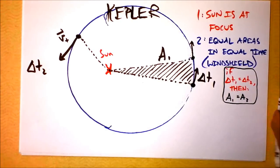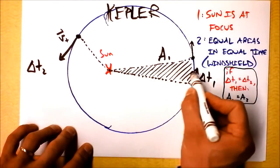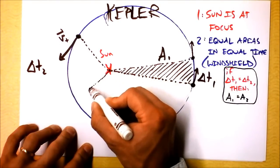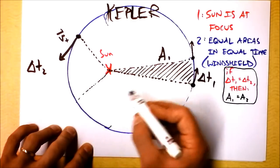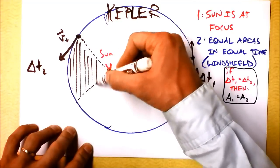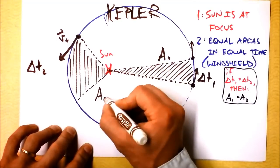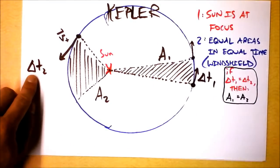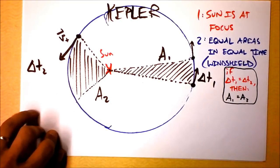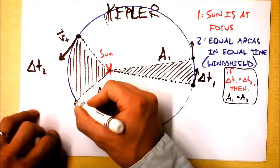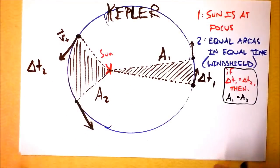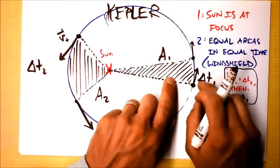And I'll try to draw that for you. What we're saying is that this area is then a much broader area here because of the fact that it's going faster. So we'll shade in this area and call it A2. And we'll say that if delta T2 is the same time as delta T1, then those areas that the planet has swept out, that's the cool language about windshield wipers, then that area that the planet has swept out is equal to the area it swept out over here.